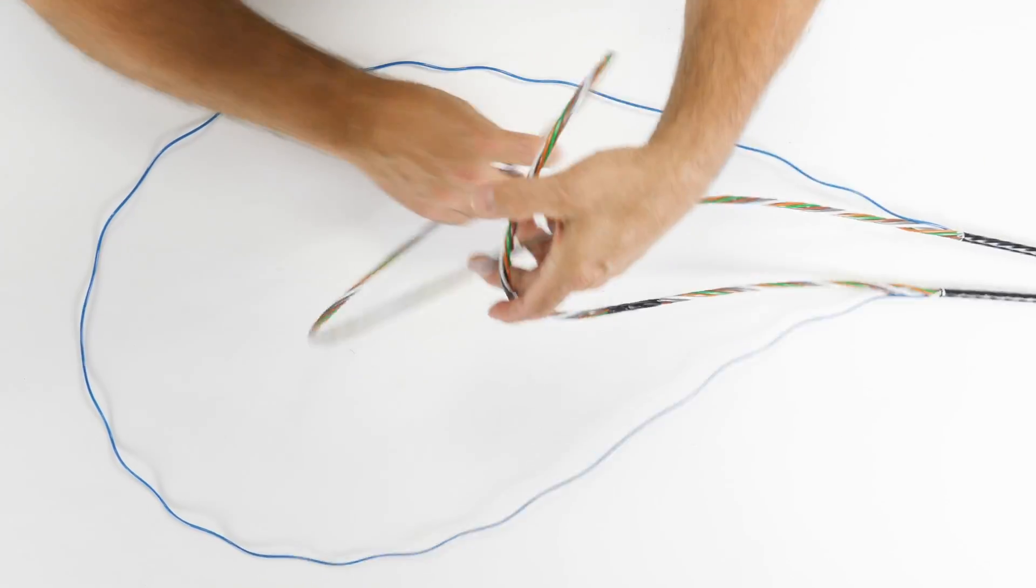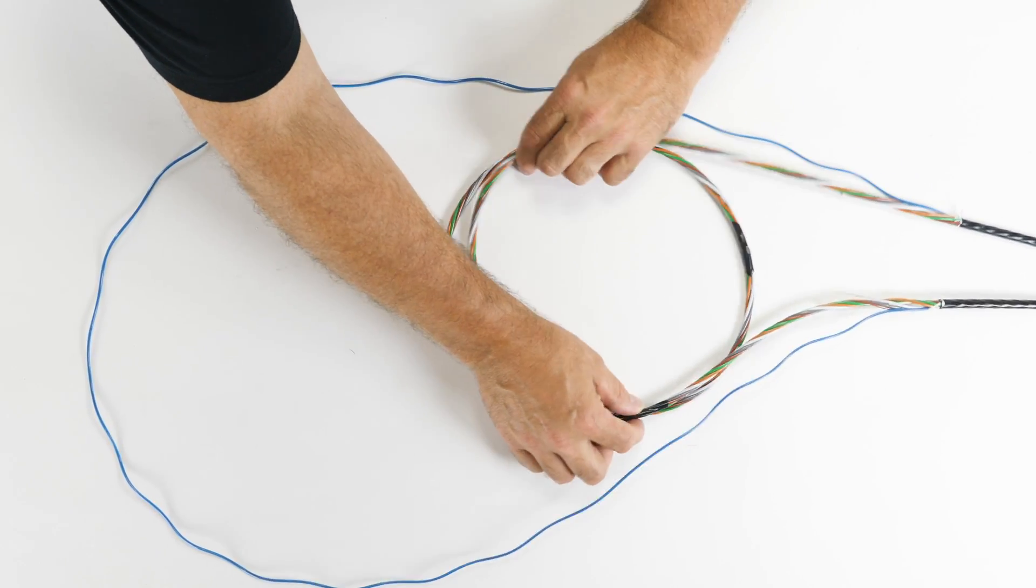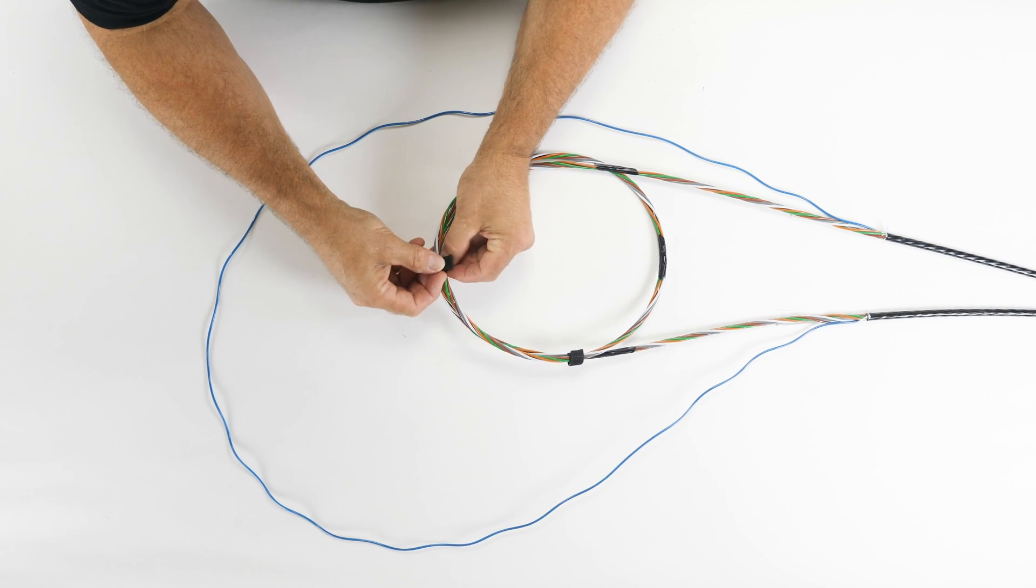Flip and fold the remaining buffer tubes into a loop. In order to help hold the buffer tubes in place, a small piece of Velcro can be used during the process.